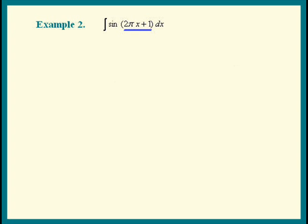So let's give it a try. That means u has to be 2πx plus 1. The method is u-substitution — we're going to get rid of all the x's and put in u's. We need to solve for dx. Du is the derivative of u times dx, which comes out to be 2π times dx. Dividing both sides by 2π, we find that dx equals 1 over 2π times du.